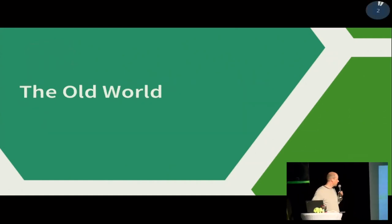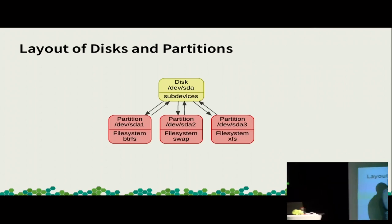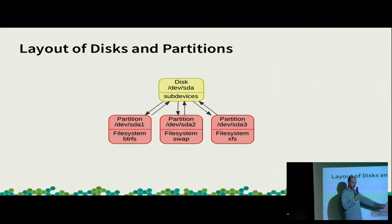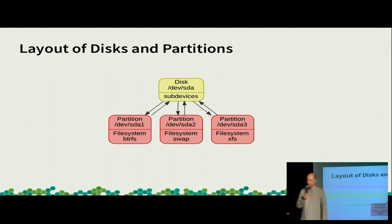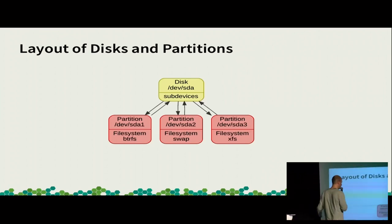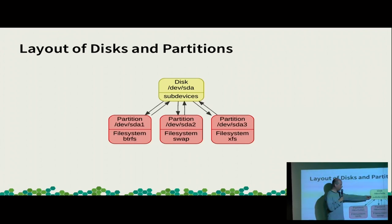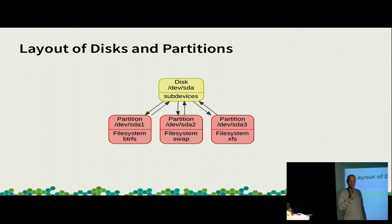So, the old world. We have a disk here, and the disk can have a few partitions, and we have information about the file system as part of the partitions. That looks so far fine, but already this has two major problems. One is you cannot have a file system directly on the disk. Another problem is BtrFS with multiple devices — it also doesn't fit here.